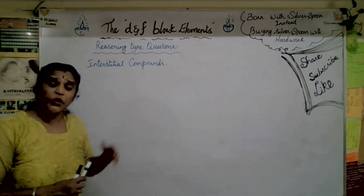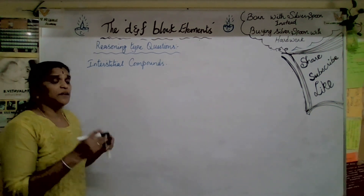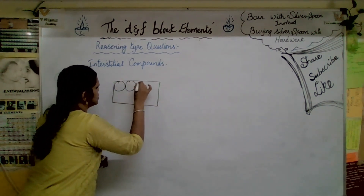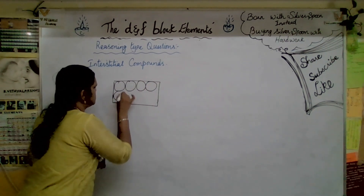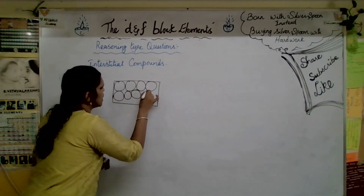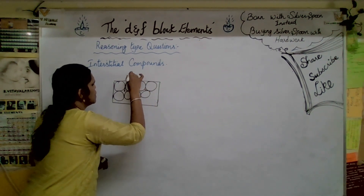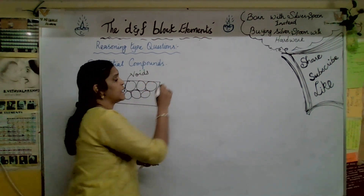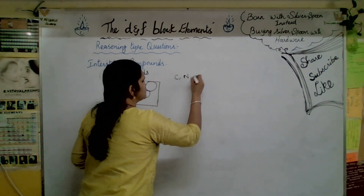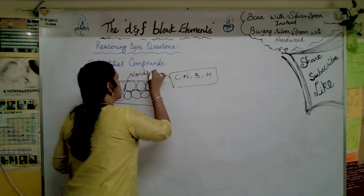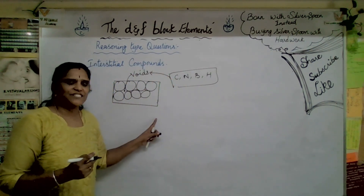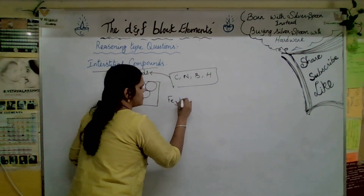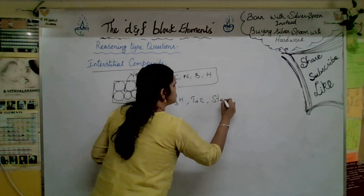What do you mean by interstitial compounds? Transition metals have voids - empty spaces in their lattice structure. In these voids, atoms with smaller atomic radii like carbon, nitrogen, boron, and hydrogen can occupy the space. This forms what is called interstitial compounds. Examples include Fe3H and TiC, and even steel.